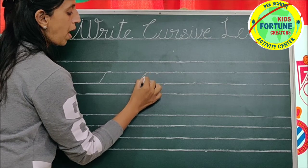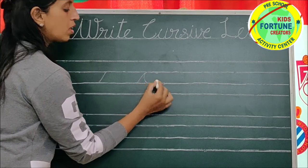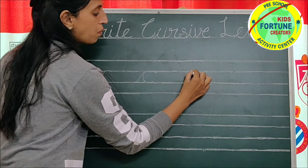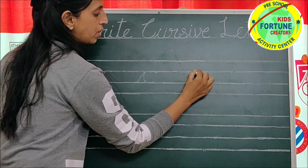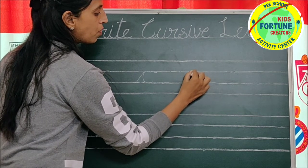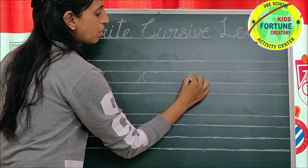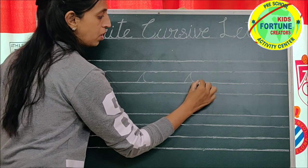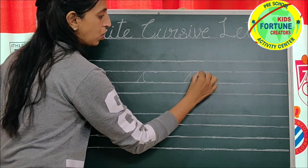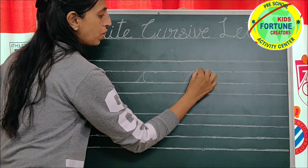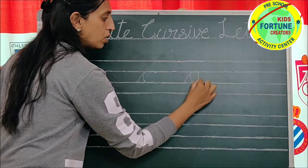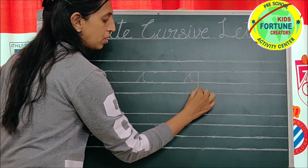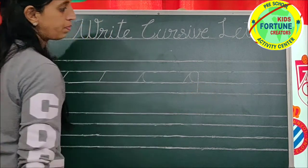Come back with a curl. Go up with a slant line. Move forward. Come back with a curl. Go up. Come down on same line. Till last line.